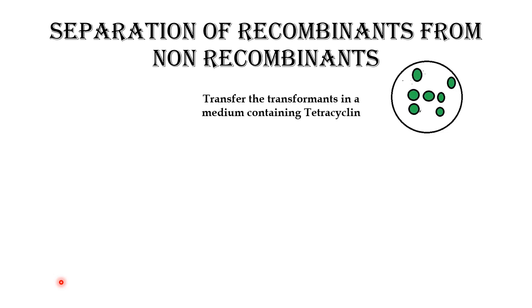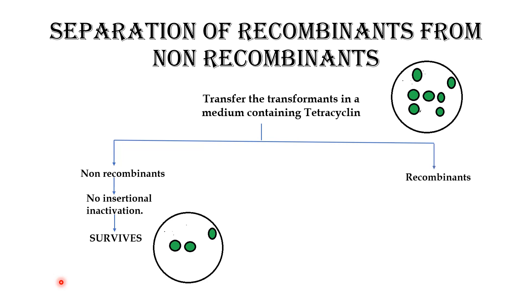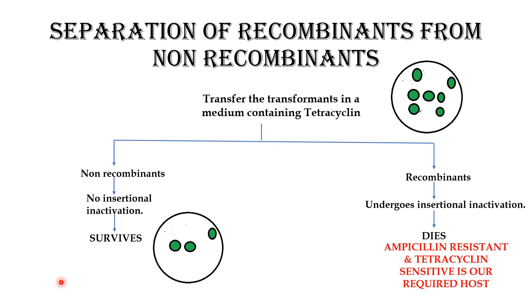Now we have to separate the recombinants from the non-recombinants. For this, we transfer the transformants into a medium containing tetracycline. In the non-recombinant, there is no insertional inactivation, so it will survive in the tetracycline medium. Whereas in the recombinant, there is insertional inactivation, because of which all the recombinants will die. Hence, we successfully separate the recombinants from the non-recombinants. We can say that the ampicillin-resistant and tetracycline-sensitive colony is our required recombinant transformant host.